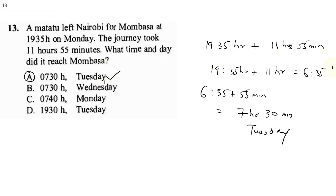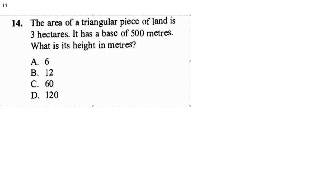We'll be going to question 14. If you've not hit the subscribe button, don't forget to hit the subscribe button and click the notification bell. This question says the area of a triangular piece of land is 3 hectares. First thing I want you to know is 1 hectare is equal to 10,000 meters squared. So 3 hectares will give us 30,000 meters squared.